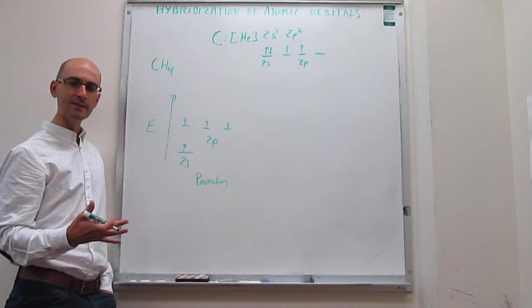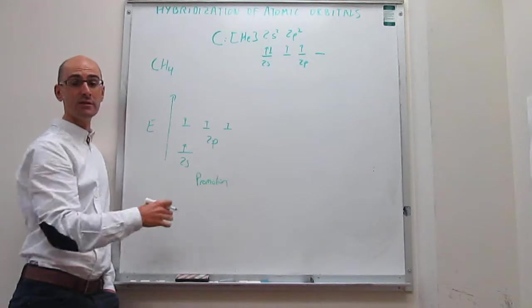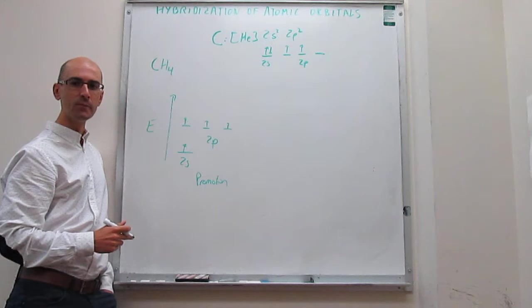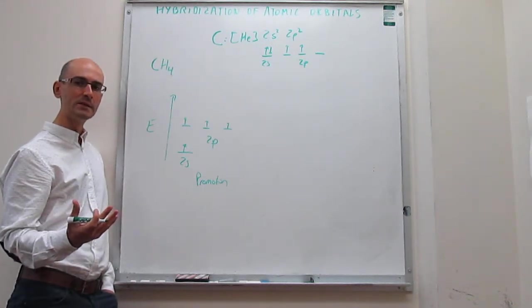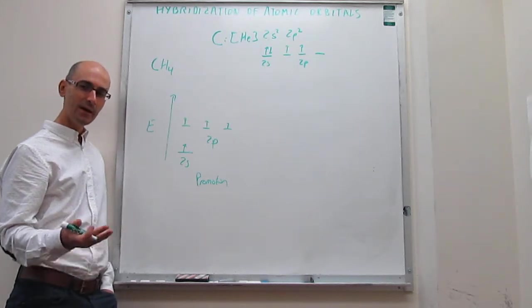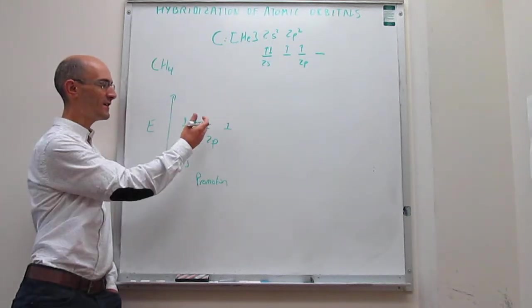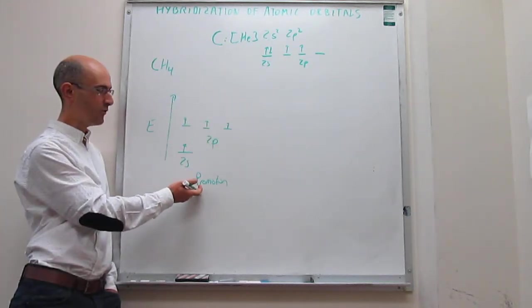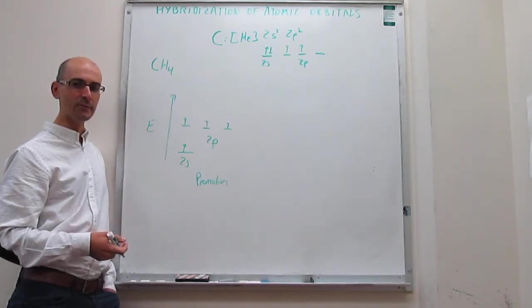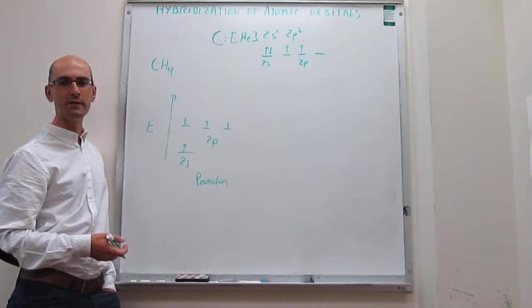We recognize that this carries an energetic penalty because this electronic configuration is of higher energy than the one where you have the electron in the 2s orbital. However, we're opening up the possibility for forming not two bonds but four bonds. We know that forming a bond is very stable. It releases a lot of energy. So this investment in energy that we're putting in to promote the electron is going to be more than compensated once you're able to form four bonds. So this is not so much of an energetic penalty.